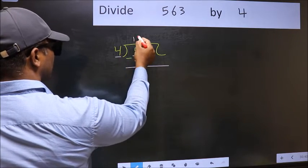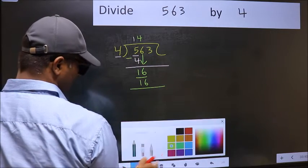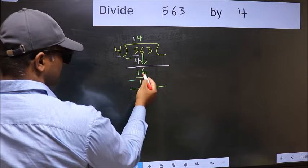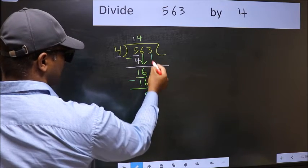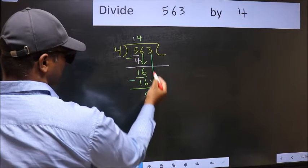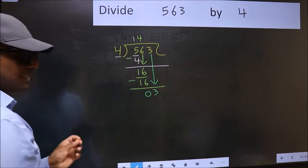Now 16. When do we get 16 in 4 table? 4 fours, 16. Now you should subtract. 16 minus 16, 0. After this, bring down the beside number. So 3 down. After this step, the mistake happens.